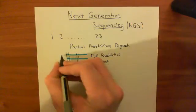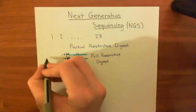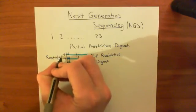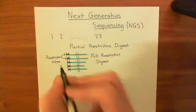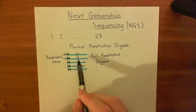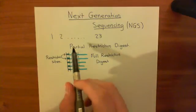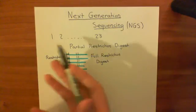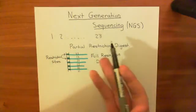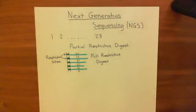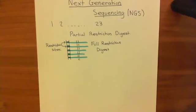These marked positions are restriction sites — or recognition sites — where the restriction enzyme will recognize and cut. The problem with a full restriction digest is that after sequencing all those fragments, you can't piece them back together. You don't know which fragment comes in which order or even which chromosome it's from. So instead, what you do is a partial restriction digest.